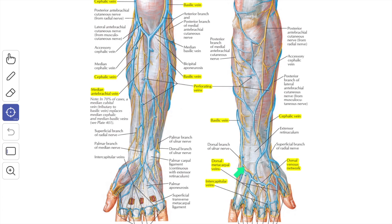Next we'll see about the dorsum of the hand. The ulnar side of the dorsum and the medial one and a half fingers are supplied by the dorsal branch of the ulnar nerve. The lateral three and a half fingers are supplied by the superficial branch of the radial nerve.